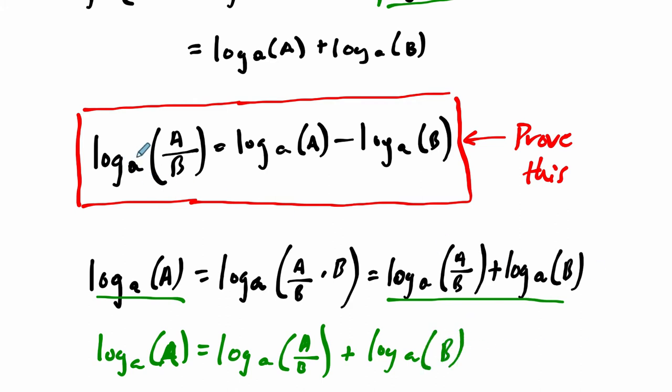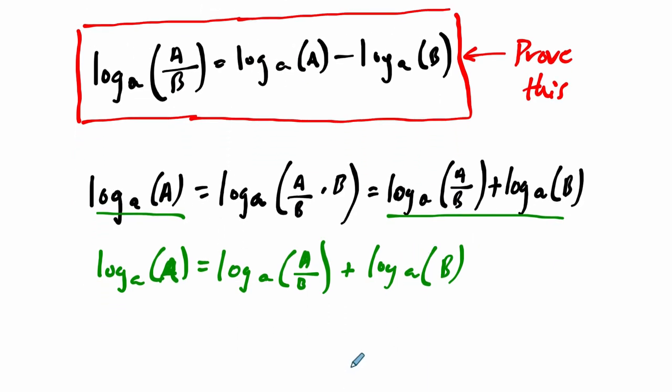And we want to prove that the log base A of A divided by B equals the difference of log base A of A and log base A of B. So all we have to do, isn't this great? You just subtract log base A of B on both sides. If you do that, if you subtract it on both sides, what do you get?